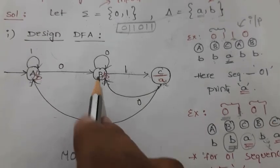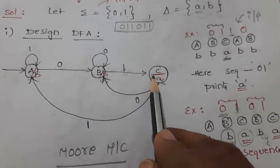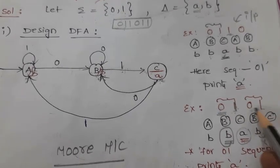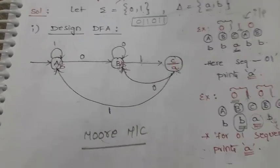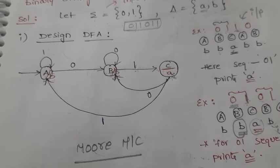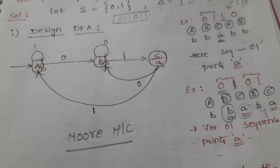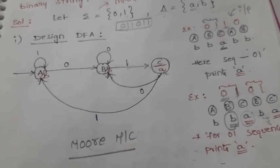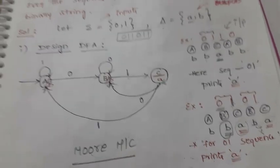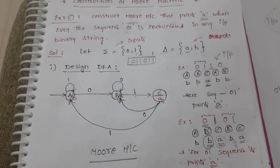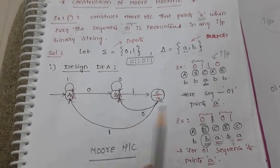After that we have another 1, giving us a new 0,1 sequence, which should end with output A. So the logic is: if we start with 0 and then get 1, it leads to the desired output A. This is the method to construct a Moore machine based on our requirement. Thank you.